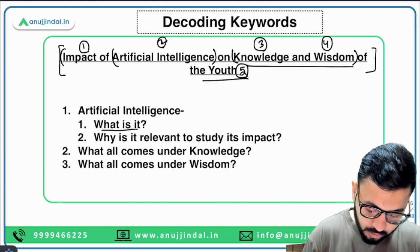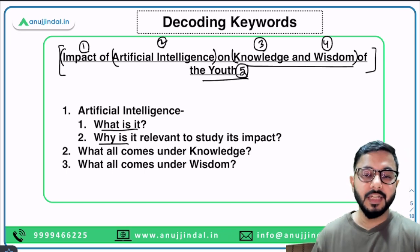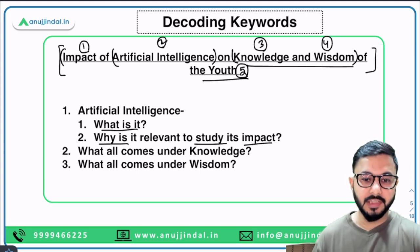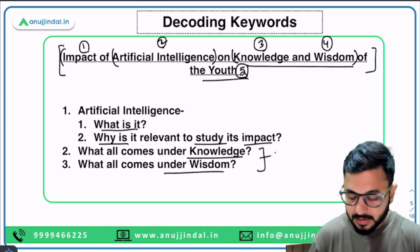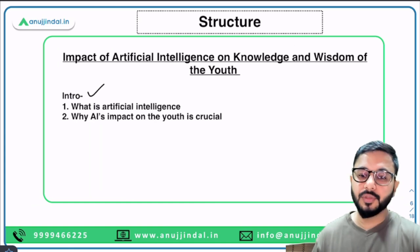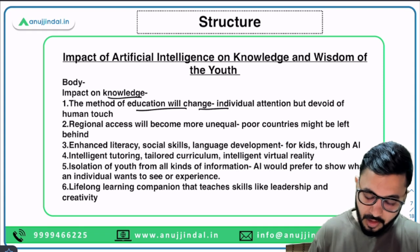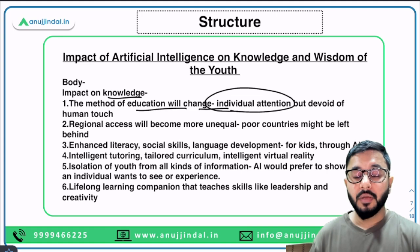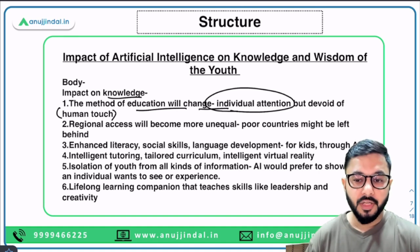In the introduction we will discuss two things: what is artificial intelligence, and why is it relevant to study its impact. We will also identify in advance what comes under knowledge and what comes under wisdom, so we can easily write a good body. In the body, impact on knowledge: first, the method of education will change — with AI we will get more individual attention but the human touch will go down. These are contradictory things that people will experience.